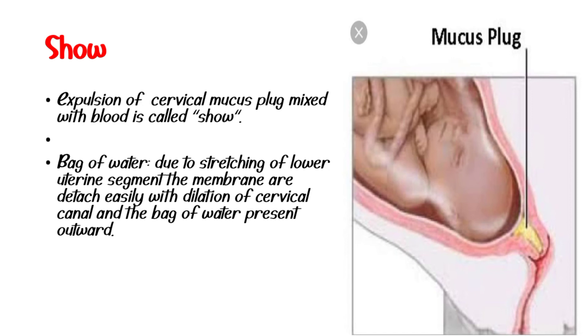What is the expulsion of cervical mucous? This is the cervical mucous plug — also called the 'show'. It is blood-tinged mucous discharge that comes out as the cervix begins to efface and dilate. It is the back of water.